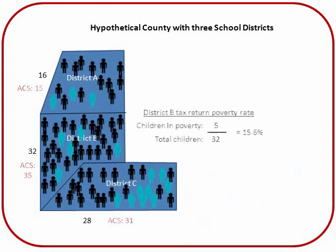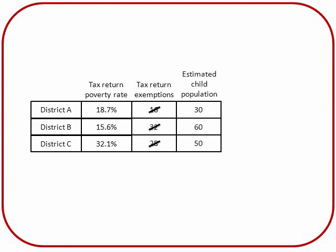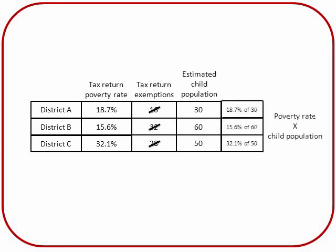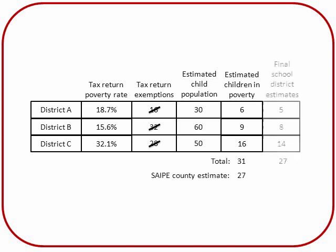To come up with a final estimate, we need to make some adjustments. We arrived at a tax return-based poverty rate, but we know that may not count everyone. We have a good estimate, based on the census, of the current relevant child population for each school district, so we multiply that by the poverty rate we derived to get an estimate of the total number of children in poverty for the district. Finally, we ensure that the total for the county matches the SAPI estimate. In this example, we need to reduce each school district estimate by about 15%.